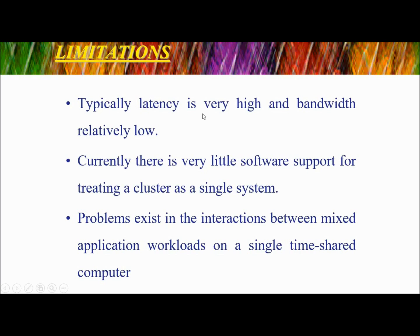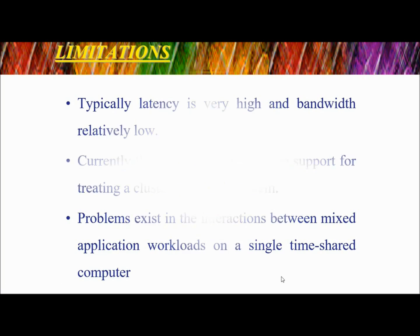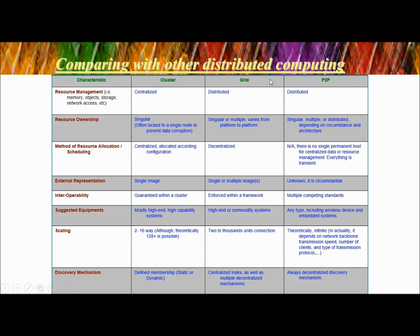There are certain limitations. Typically, latency is very high and bandwidth is relatively low. Currently there is very little software support for creating a cluster as a single system, and problems still exist in the interaction between mixed application workloads on a single time-shared computer. Comparing clusters with grid and point-to-point: resource management is centralized in a cluster while in others it is distributed. Resource ownership is singular in a cluster, often locked to a single node to prevent data corruption, while in grid it can be singular or multiple, and in point-to-point it varies.